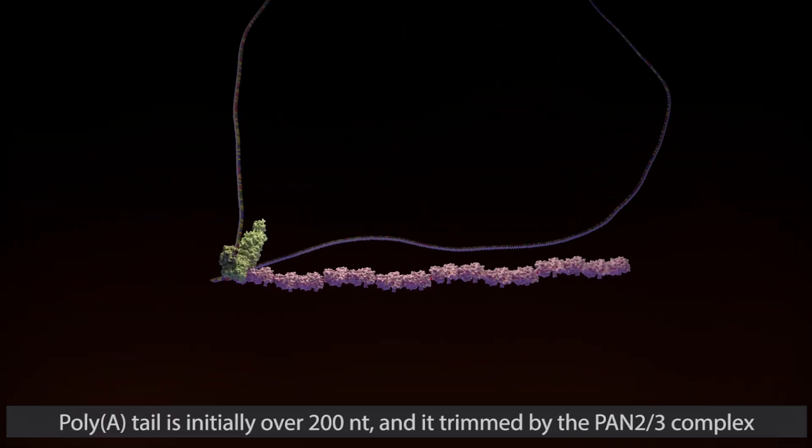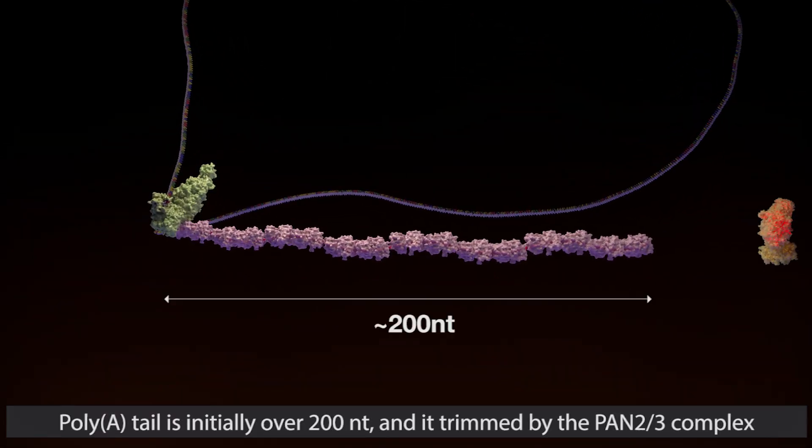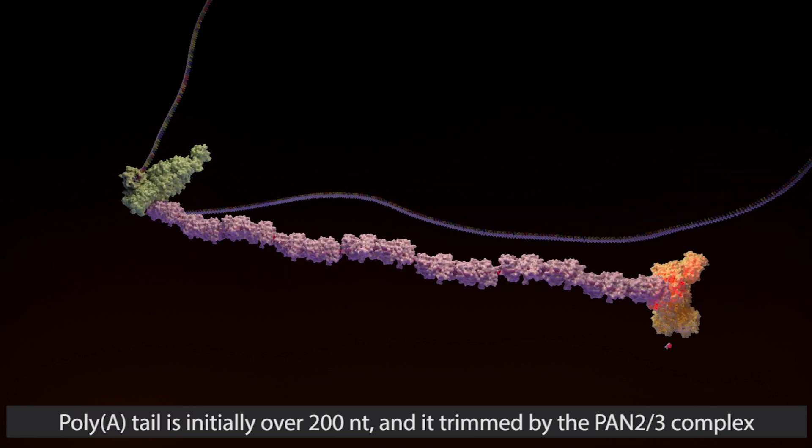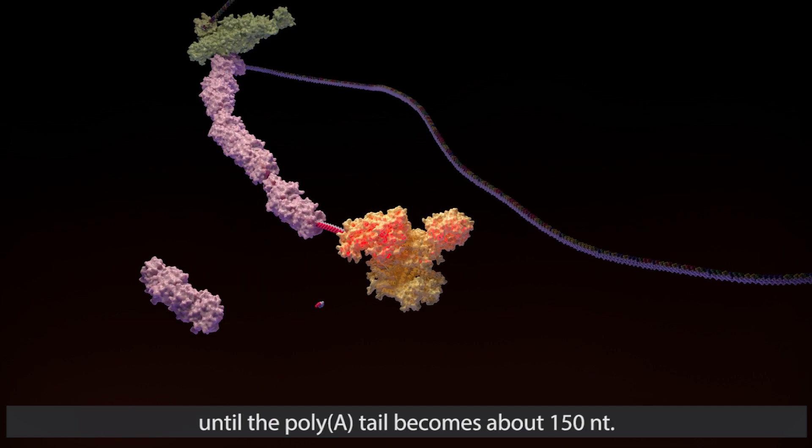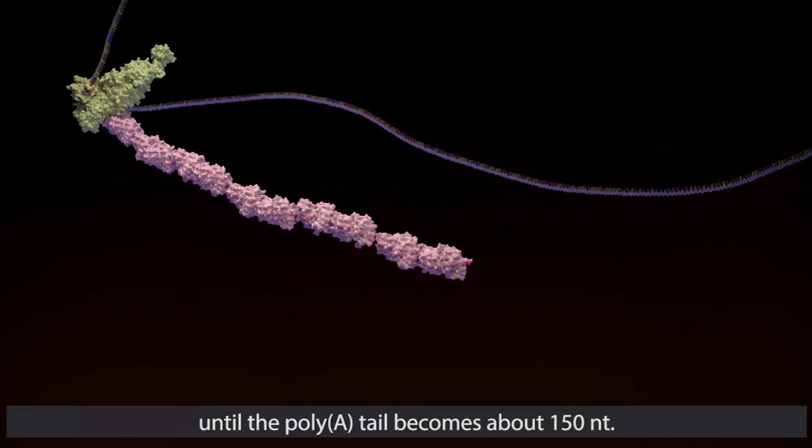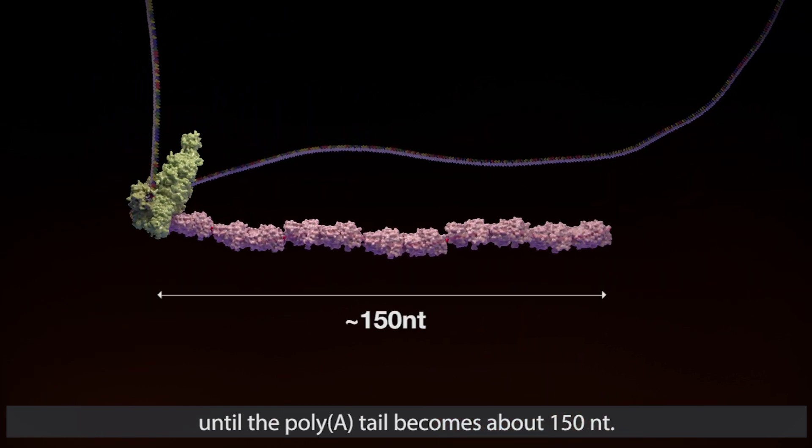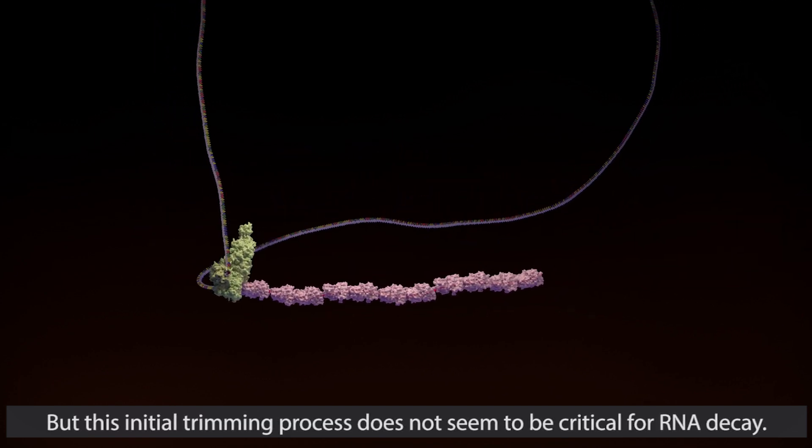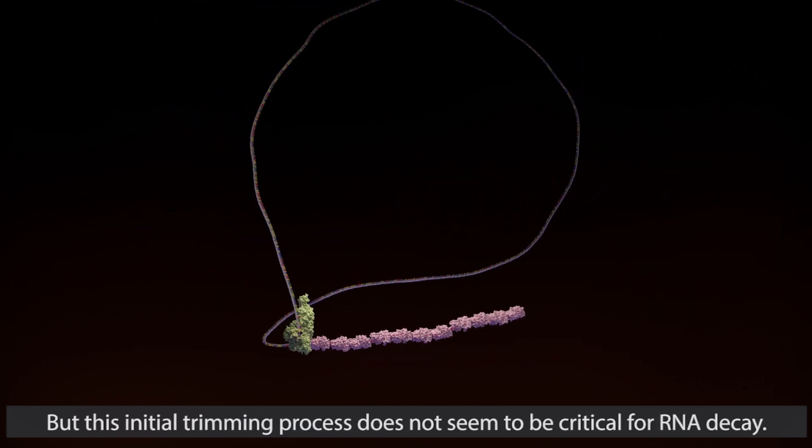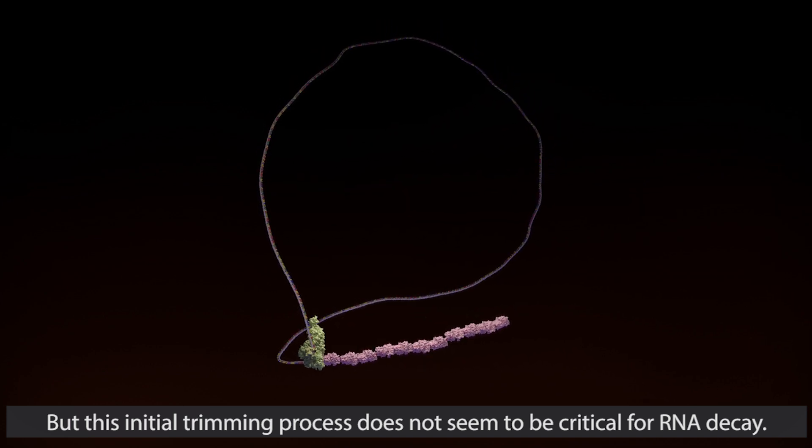Poly(A) tail is initially over 200 nucleotides, and it is trimmed by the PAN2/PAN3 complex until the poly(A) tail becomes about 150 nucleotides. But this initial trimming process does not seem to be critical for RNA decay.